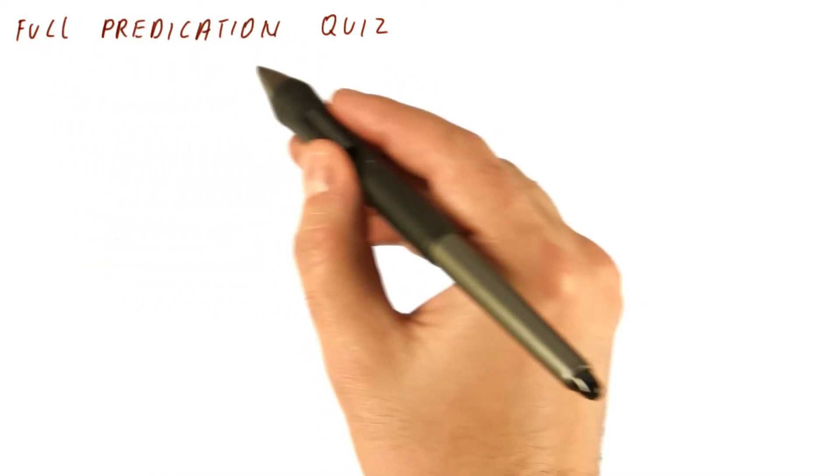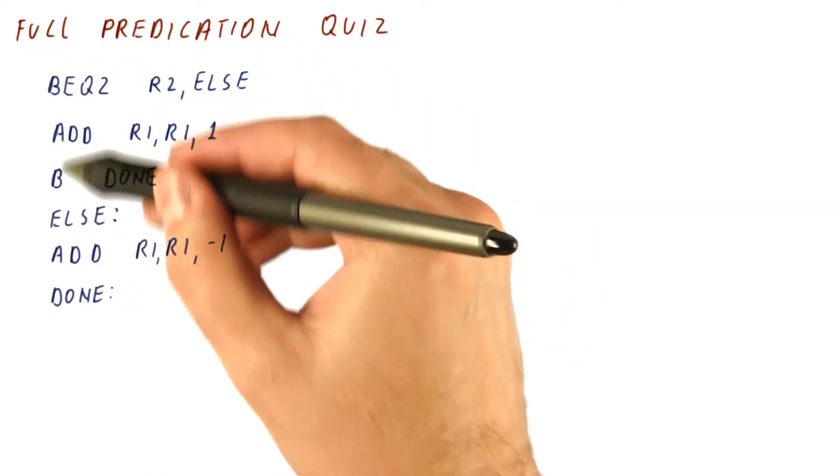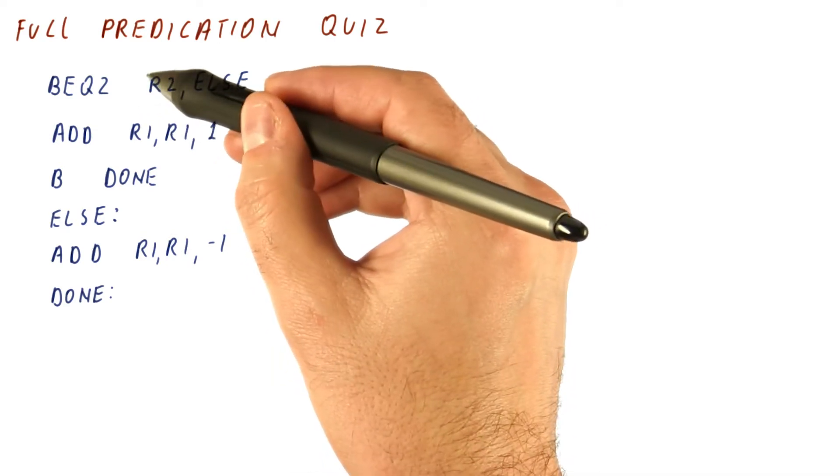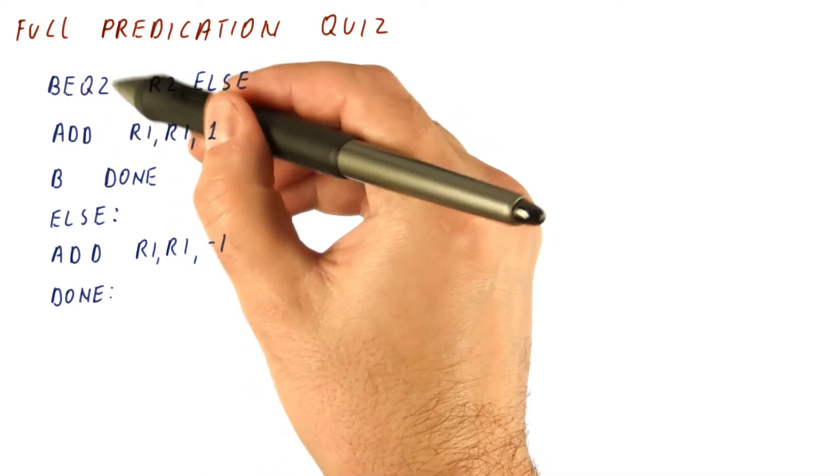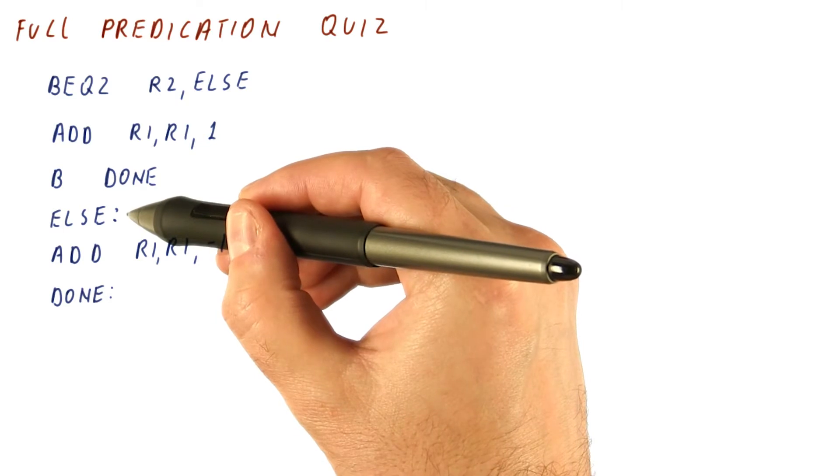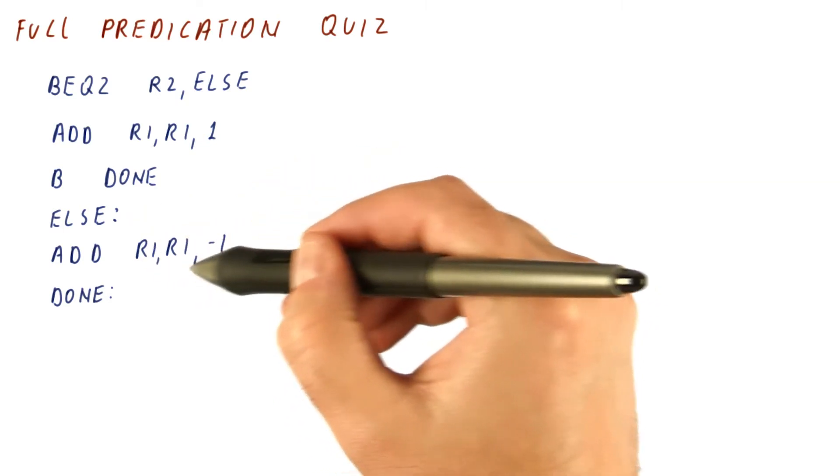Let us see if we can do some full predication of our own. Suppose that this is the original code where we check if r2 is equal to 0. If it is, we jump here and decrement r1 by 1.